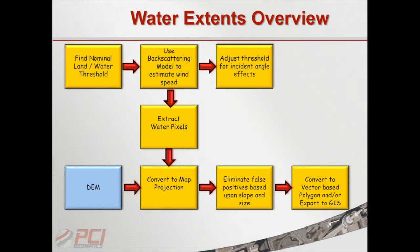The first thing we want to do is establish some nominal threshold between the land and the water. We need to have an image that has some land and water in it, do some statistical processing, and be able to separate the two. Once we have some idea of what that threshold is — and this is only done to get an initial guess — we go to a backscattering model.